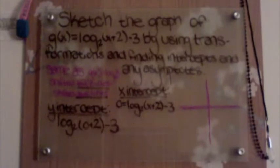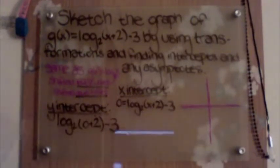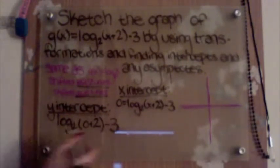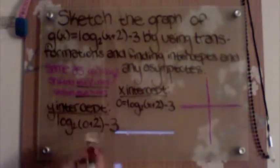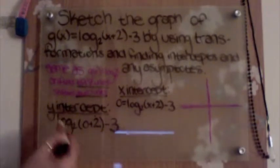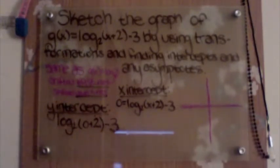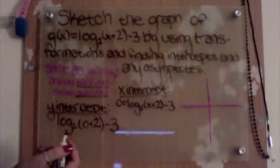We'll move on to the y-intercept, which will be giving us our vertical asymptote. So to do our y-intercept, all we do is replace x with 0. So we have log base 2 of (0+2) minus 3. Log base 2 of 2 is simply 1, so we have 1 minus 3, which gives us negative 2.